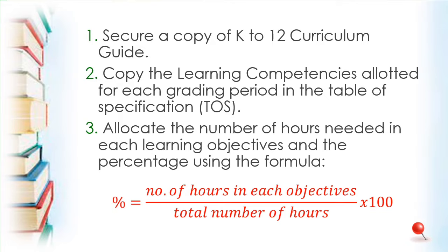Step seven: put the total below each row. Step eight: placement of test items will be determined when the test paper is finished. That is not always the case — personally, while making the TOS, I also make the test questions per learning competency so I am guided on what comes next. The allocation can be 70-20-10 or 60-30-10 — it's up to you. That's how easy it is to make a Table of Specification.